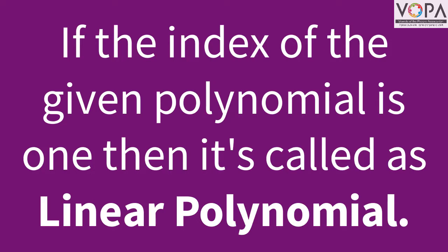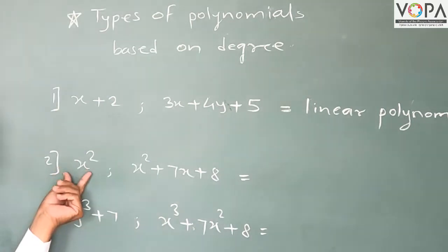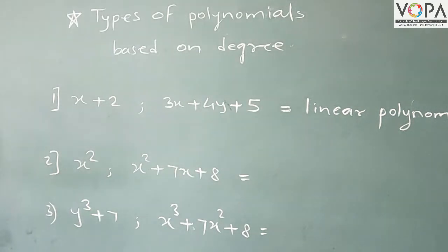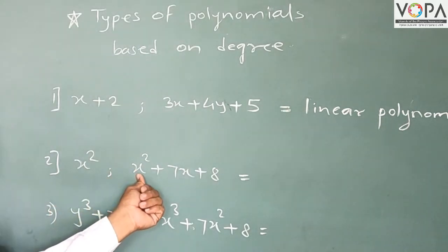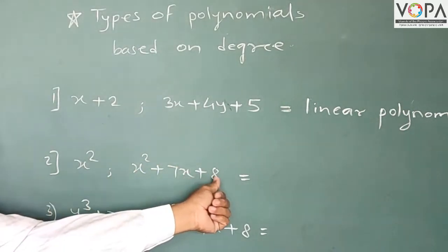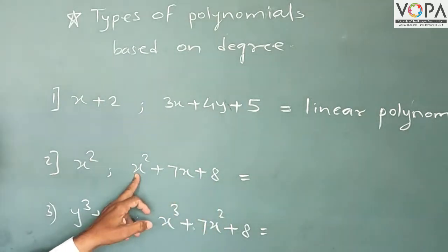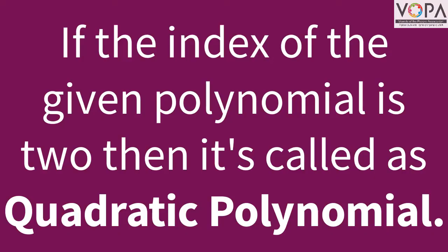Another example: x². Here there is only one term, so it is a monomial, and the index is 2. If the index of the given polynomial is 2, then it is called quadratic. Second example: x² plus 7x plus 8. Here there are three terms but the highest index is 2. Therefore it is called a quadratic polynomial.